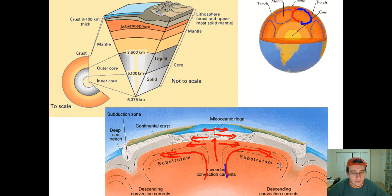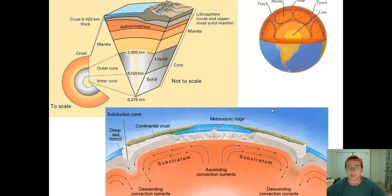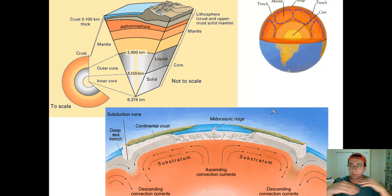Meanwhile, whenever magma currents actually hit each other, you're going to have the opposite happening — pieces of crust are sucked into the mantle and melted, in what we call convergent zones. These examples show how different movements of the mantle cause movements of the asthenosphere, which then cause the lithosphere to crack, buckle, and hit each other.